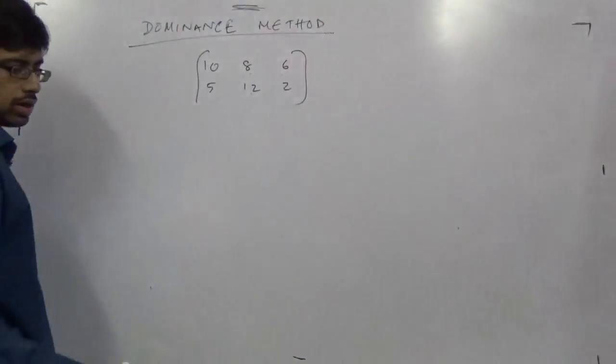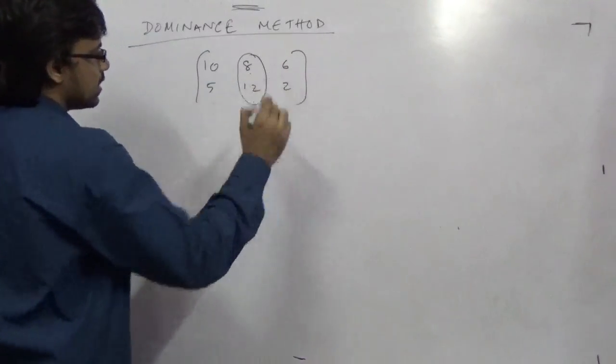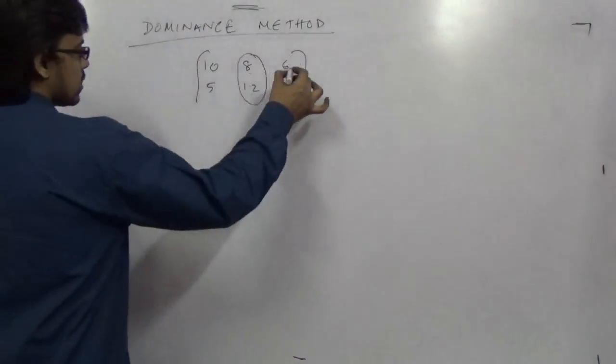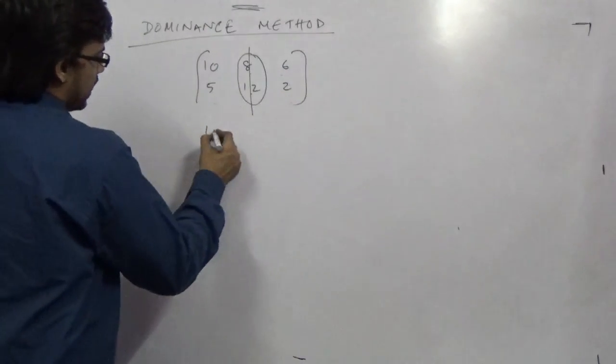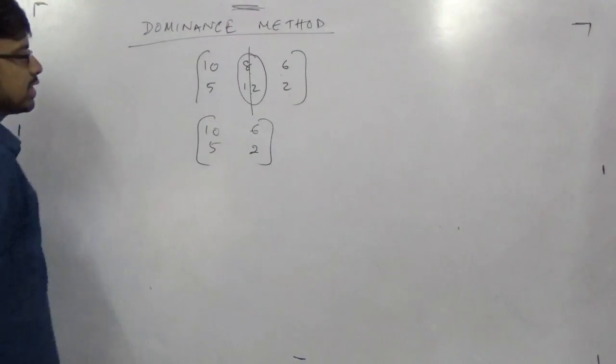Now here, I see that this column's all values are greater than these columns: 8 greater than 6, 6 greater than 2. So who will exist? This will exist and this will be gone. As I said, they behave such that the smaller will exist. This is in case of columns.